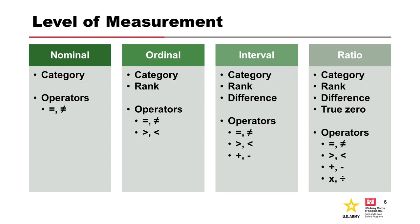The first level is nominal. Nominal measurements can only differentiate between items based on what category they're in. When comparing items, we can only evaluate whether they're in the same category or a different category. Mathematically, equality is the only operator we can use with nominal measurements — we can only say whether something is equal to a category or not equal to it.